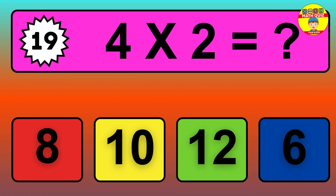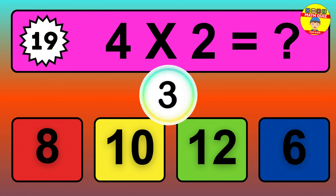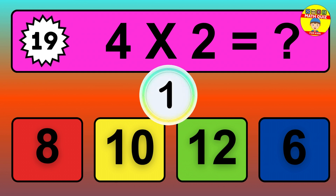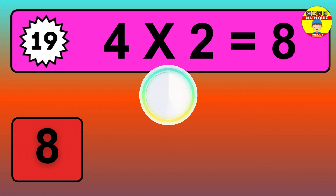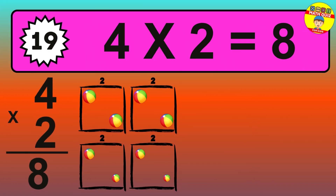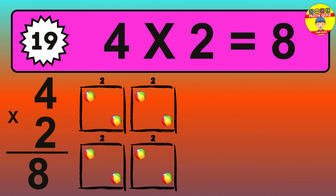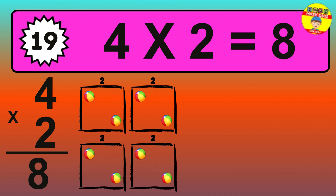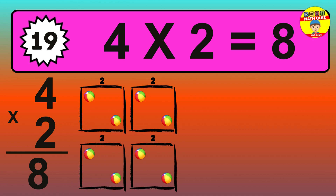Question 19. 4 times 2 equals what? The answer is 4 times 2 is 8. To calculate, we have 4 groups with 2 balls each one. So, how many balls do we have? 8 balls.